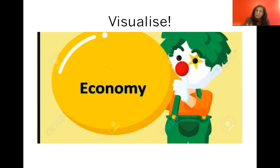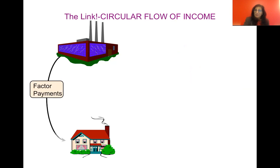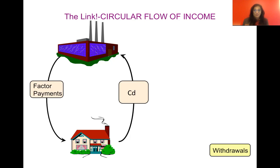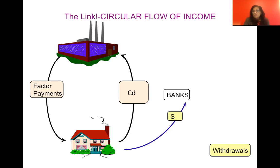The economy isn't just these two sectors going around endlessly, because people save money and pay taxes, which means money tends to move out of this flow. We'll take a ceteris paribus approach — everything else remaining the same — and focus on how money moves out for now. The very first context where money comes out of the flow is savings: if you choose to save, you're not spending that amount.